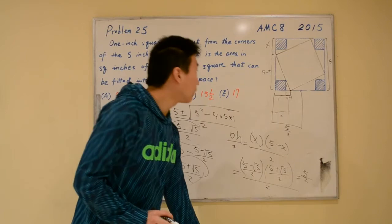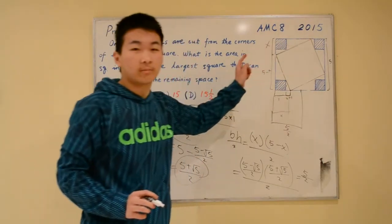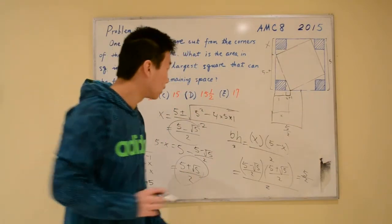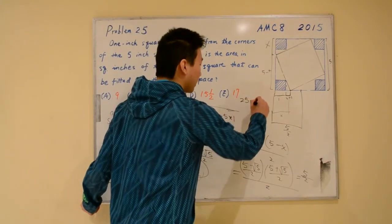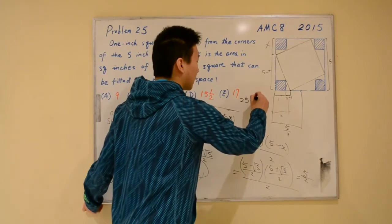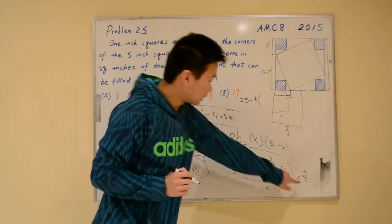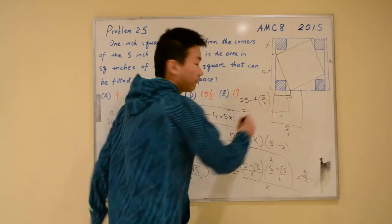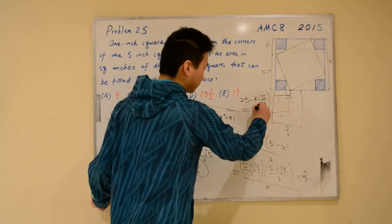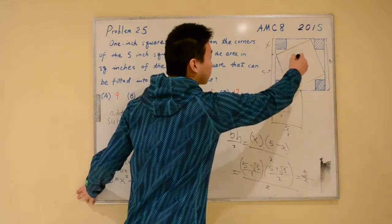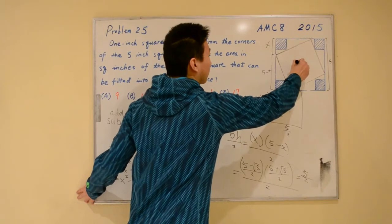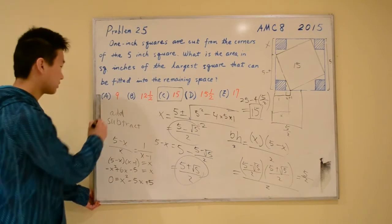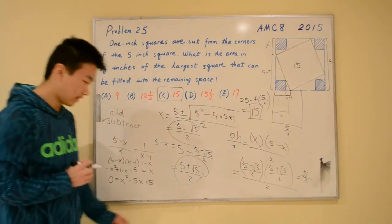Now we compute 25, the area of the big square, minus 4 times the area of each small triangle, which is 5 over 2. So 25 minus 4 times (5 over 2) equals 25 minus 10 equals 15. The area of the inscribed square is 15. Our answer is C, 15. That's how you use subtraction to find this area.